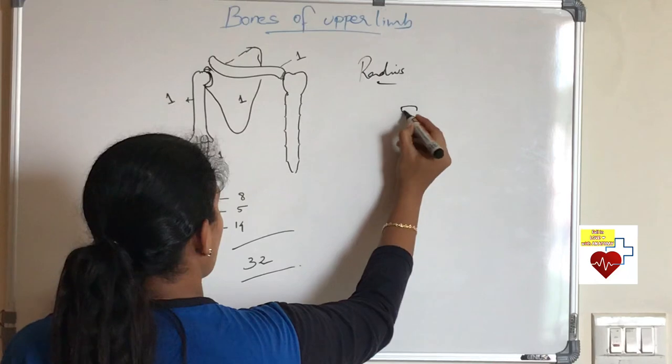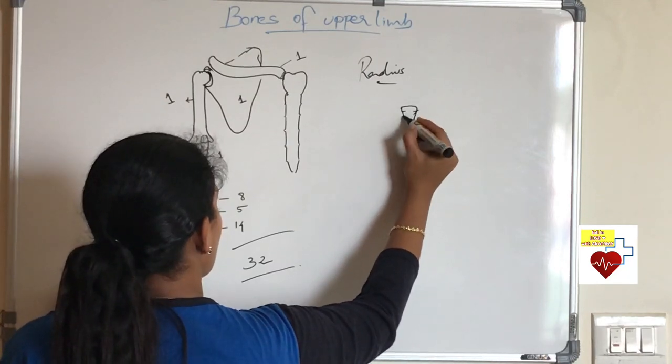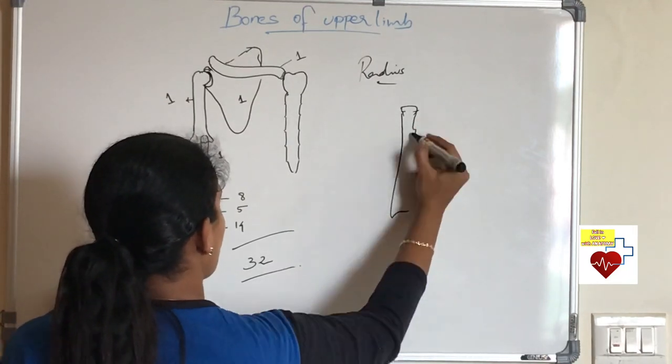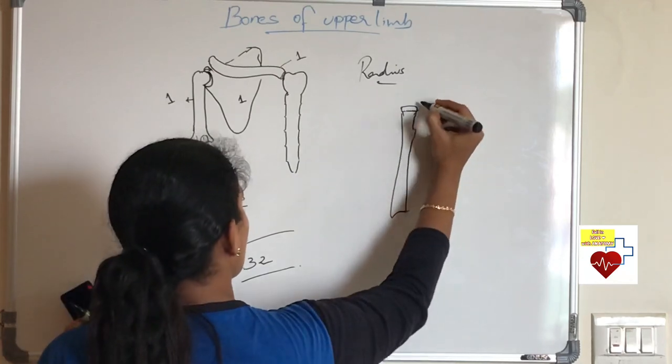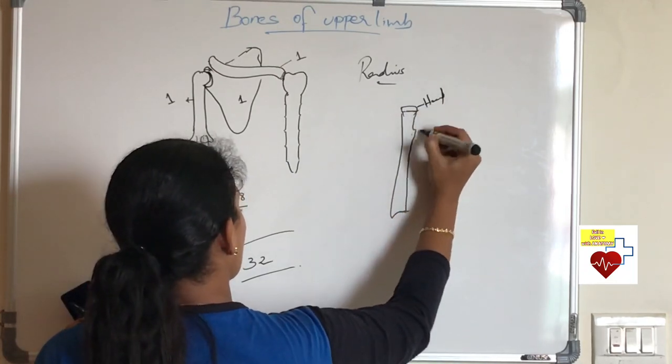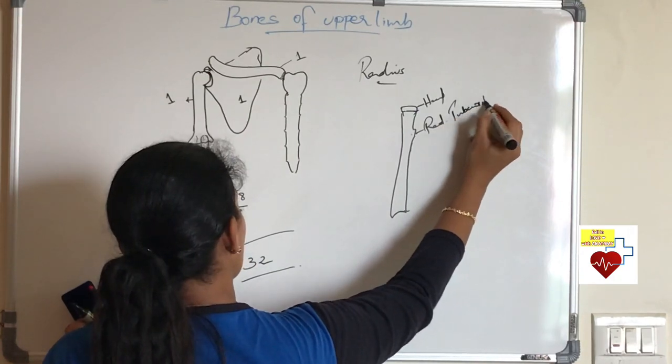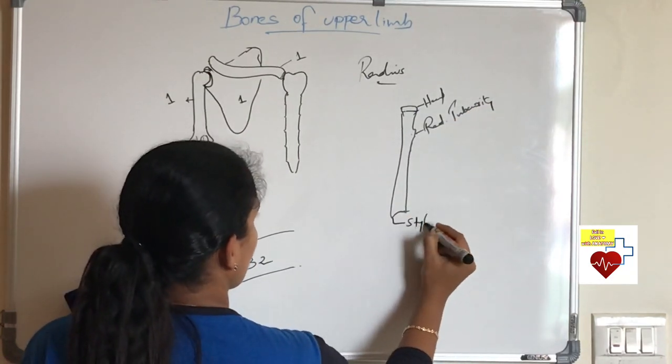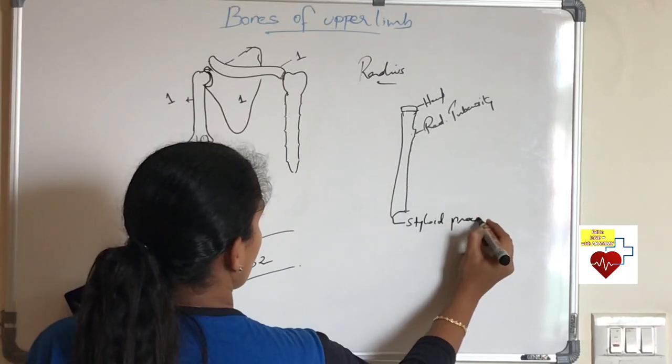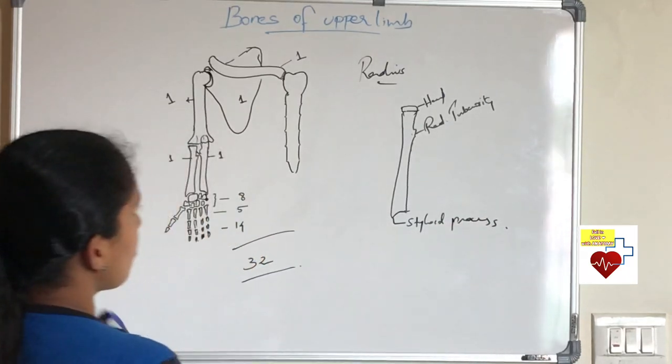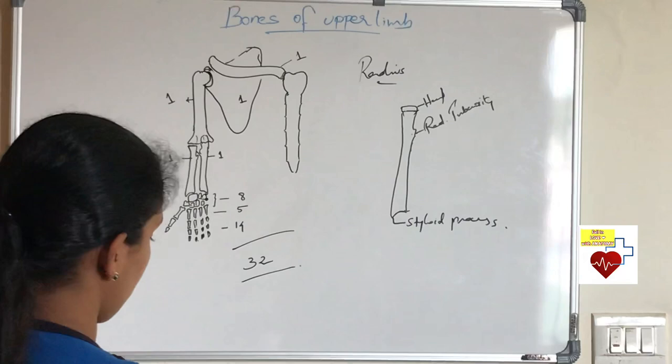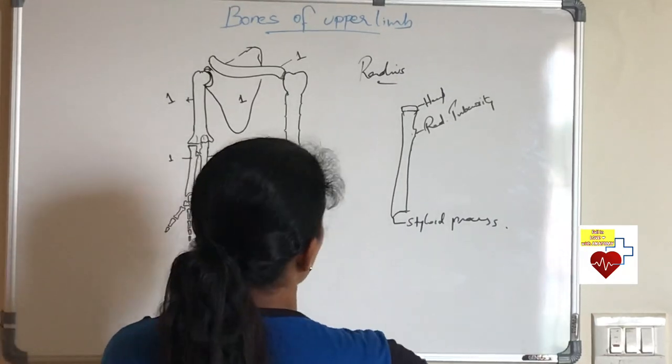Now going on to forearm bones, radius. It is also a typical long bone which has upper end, lower end and shaft. Upper end has head. Just know it has radial tuberosity. And we have styloid process in the lower end of the bone. We are not going in detail. Just we are seeing the gist of a bone, only the main points.